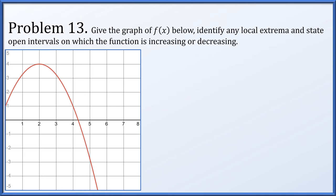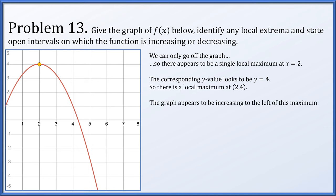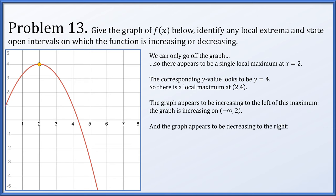For problem thirteen, we have the graph of f(x). There appears to be a single local maximum at x = 2, with corresponding y value y = 4, so there's a local maximum at (2, 4). The graph is increasing on the interval (-∞, 2) and decreasing on the interval (2, ∞).